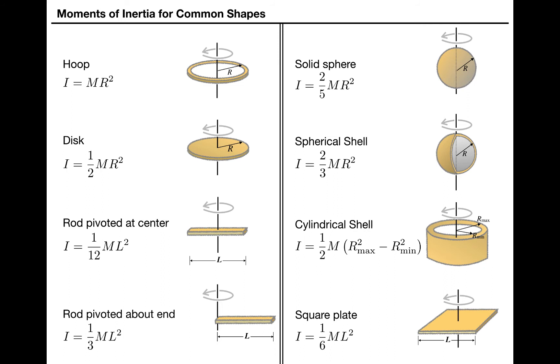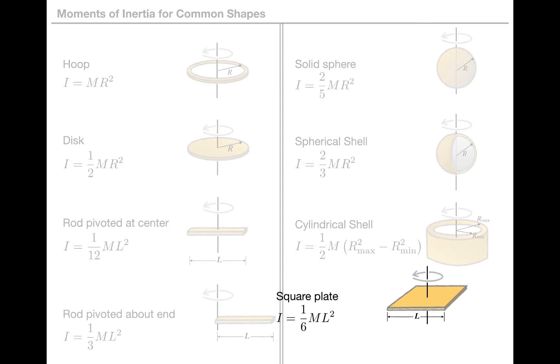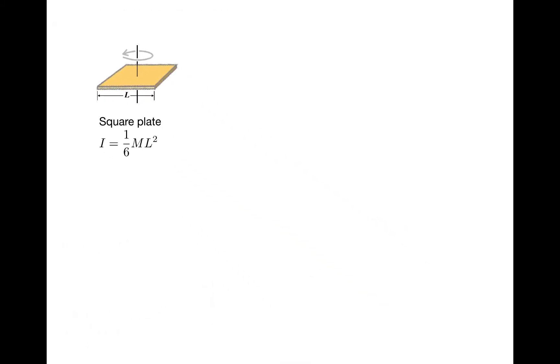Now, notice that all of these formulas, with the exception of the one for the stick rotated about its end, are developed for an axis of rotation that passes through the center of mass of the object. But what if the thing is rotated about some other axis? Take the square plate as an example. What if instead of rotating about an axis that passes through its center, it's rotated about an axis that passes through one of its corners?